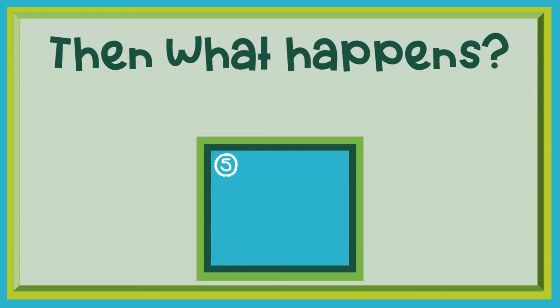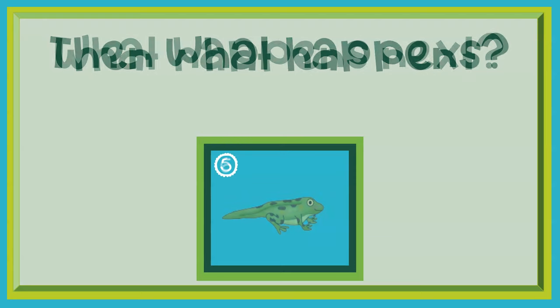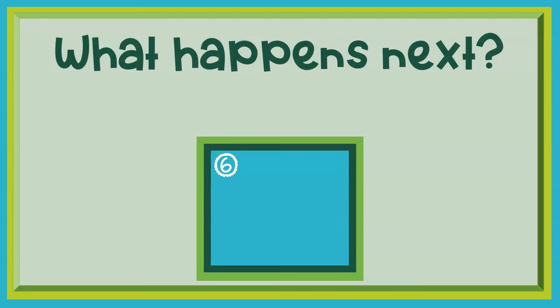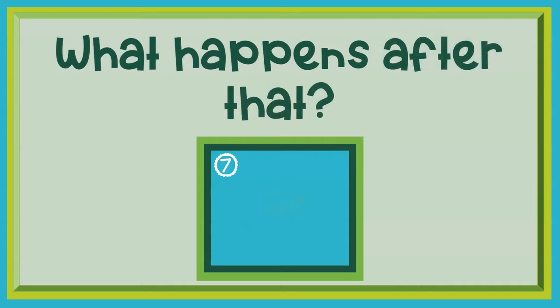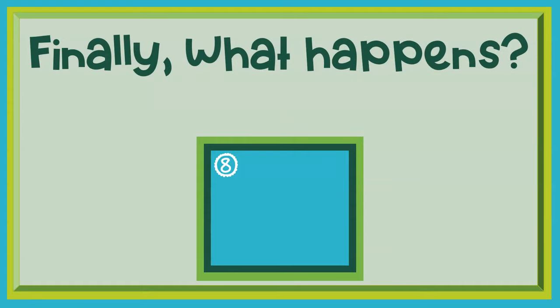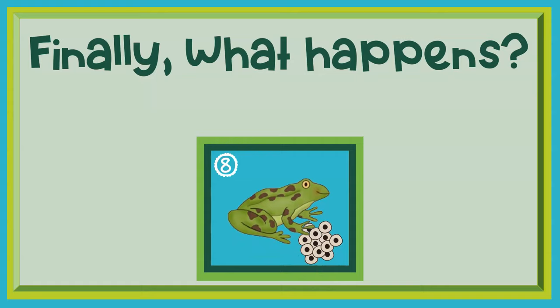Then what happens? The tadpole gets bigger and bigger, and it can now live on land. What happens next? It loses its tail. What happens after that? The tadpole becomes a fully grown adult frog. Finally, what happens? The frog lays eggs so that the life cycle can start again.